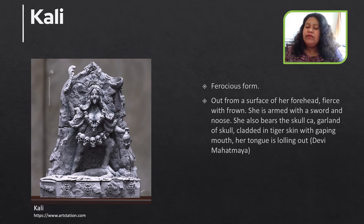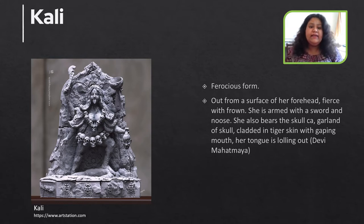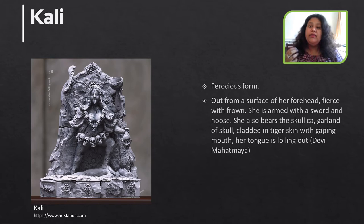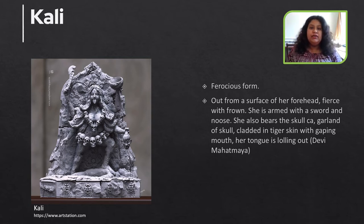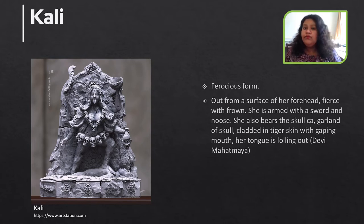Kali is depicted as very angry and emaciated. She wears a skull mala — a skull necklace — and skulls around her waist. She holds a small bow, a Khadga in her hand, and the Naramundi or the head of a human in her hand. She also holds a sword. She went to the battle, cut the head of Raktabija, and drank his blood so that it would not fall on the ground and new Raktabijas would not emerge.